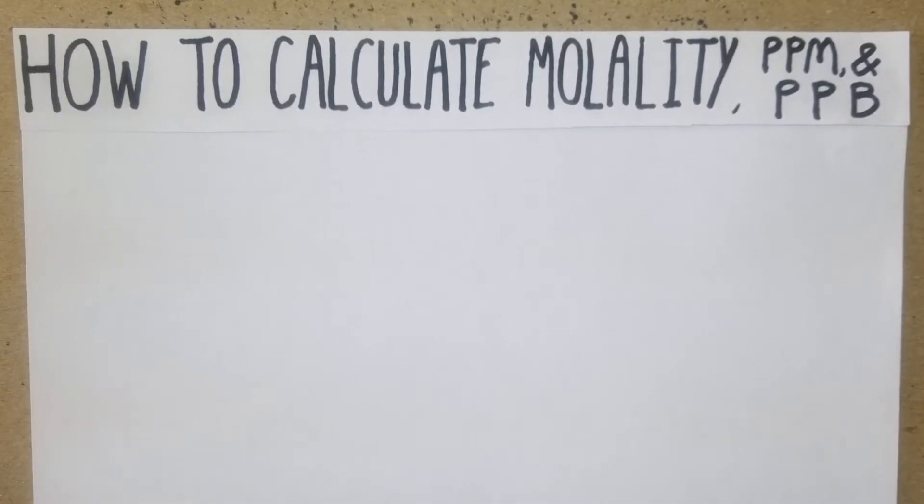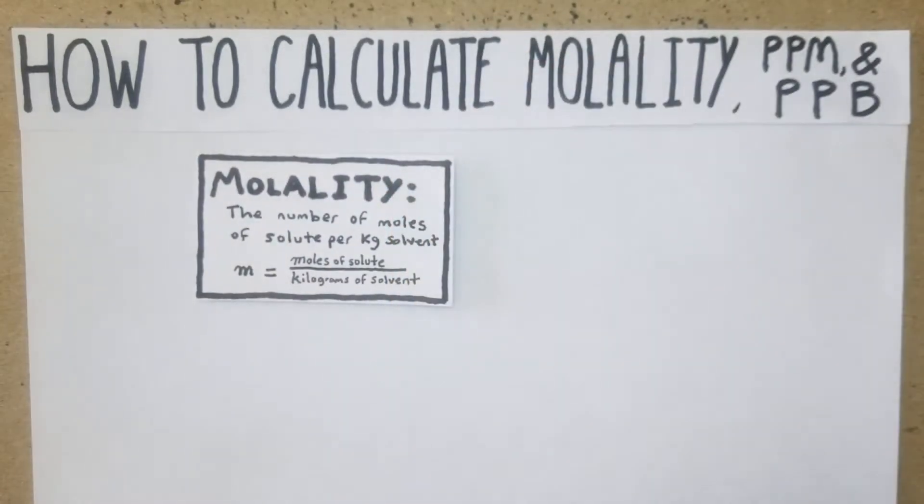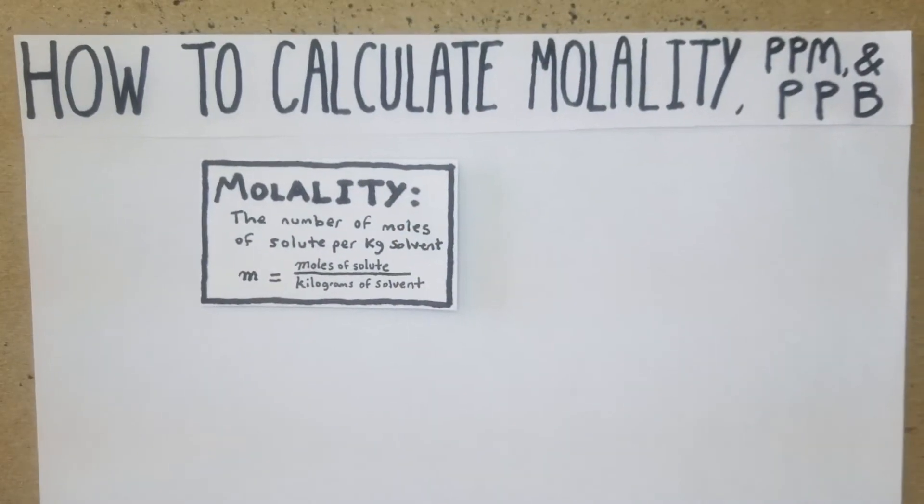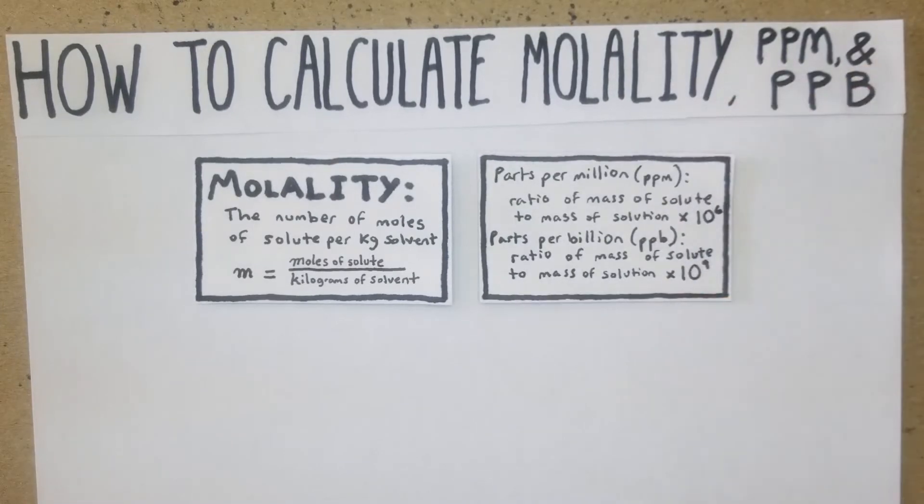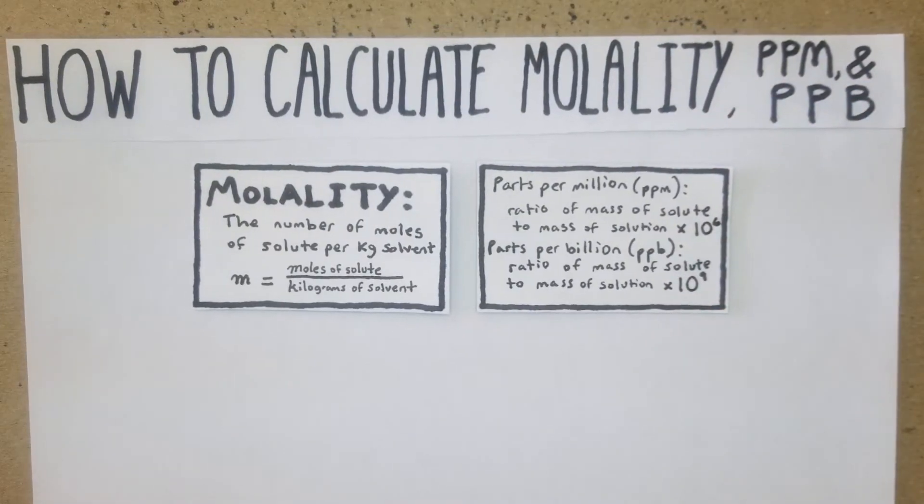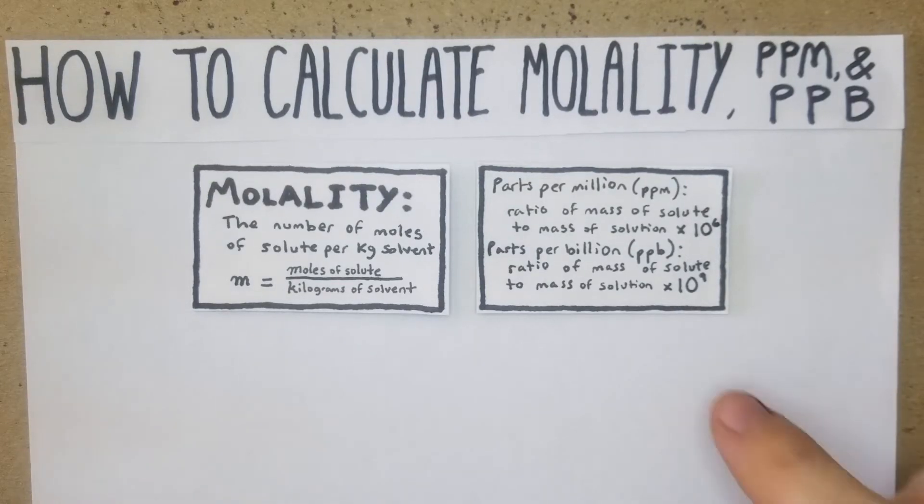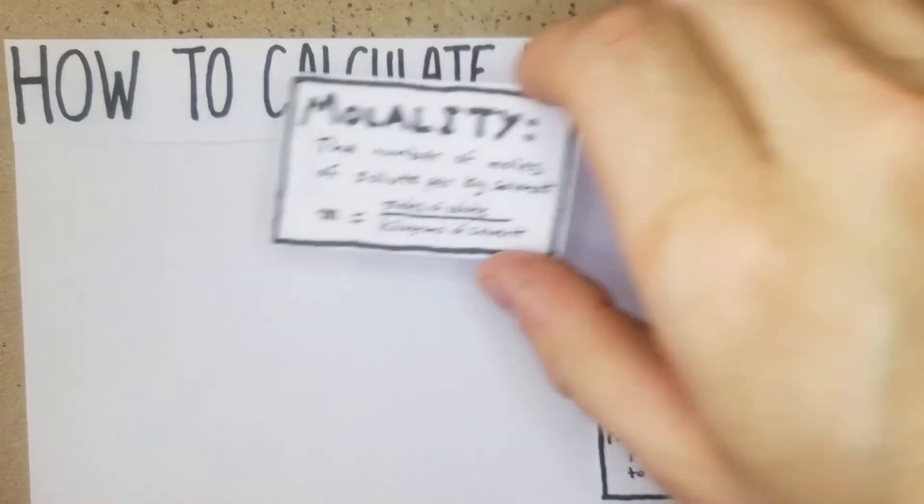How's it going guys, in this video we're going to go over how to calculate molality, ppm, and ppb - that's parts per million and parts per billion. First off, let's define these things. Molality is the number of moles of solute per kg of solvent. PPM is parts per million, that is the ratio of mass of solute to mass of solution times 10 to the sixth, and parts per billion is the same but times 10 to the ninth.